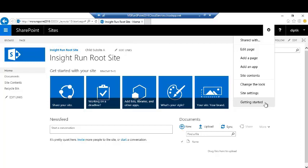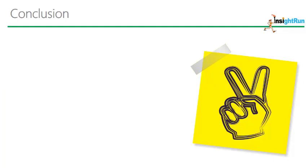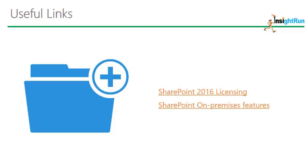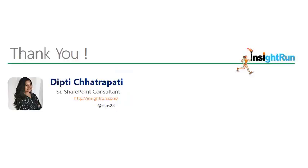In a later part of this course you will learn how to assign permissions as well. So in this module we have learned about the different versions SharePoint offers, about the basic hierarchy of a site collection, and about the basic menus and toolbars in a team site and how to navigate within the team site. I have also shared useful links for the SharePoint 2016 licensing overview and the full list of SharePoint on-premises features across the Standard and Enterprise versions. You can download these slides from the description bar. Thank you for joining me — see you in the next module of this training.